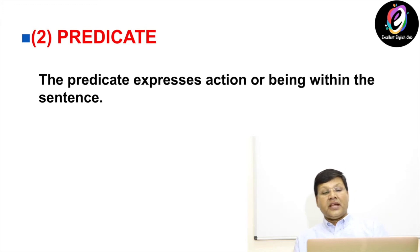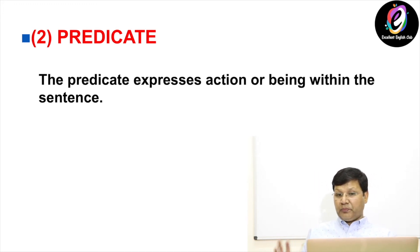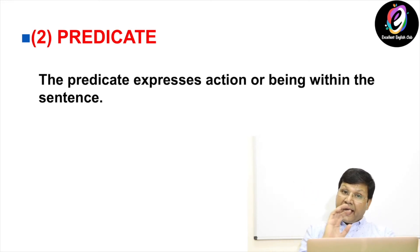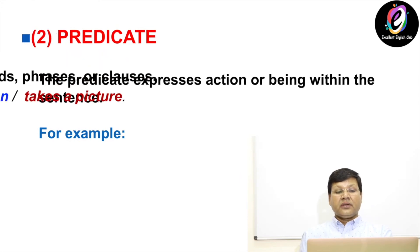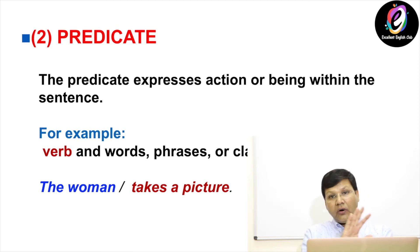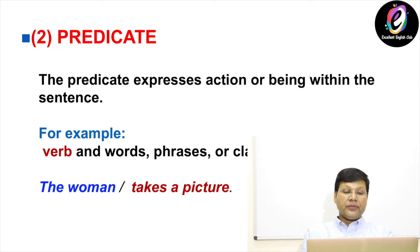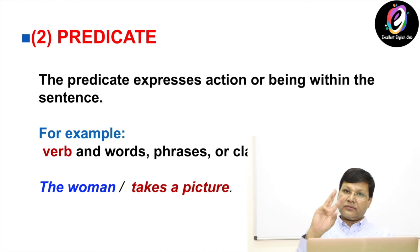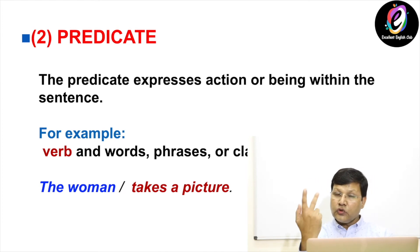Now, what is the second one? Predicate. The predicate expresses action or being within the sentence — it tells us the action or what is going on in the sentence. That is predicate. Look at the example: verb, words, phrases, clauses — all these things are predicate. For example, 'The woman takes a picture.' The woman is the subject; 'takes a picture' is the predicate. So we have only two parts of a sentence: one is subject, the other one is predicate.